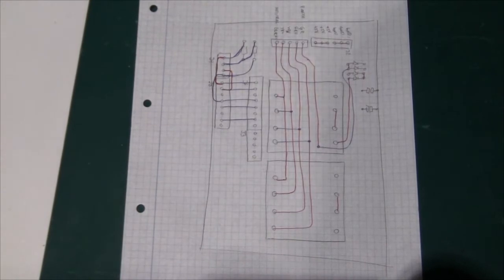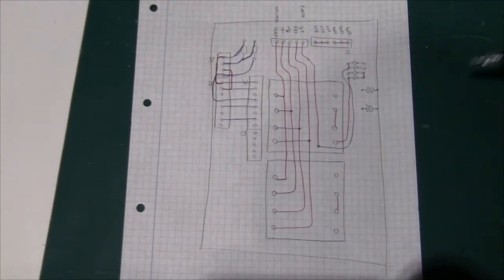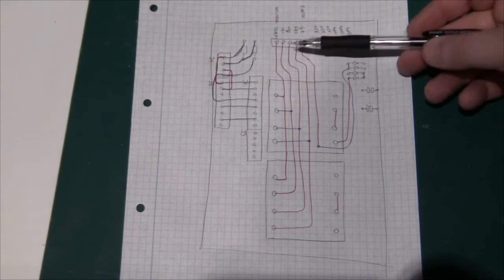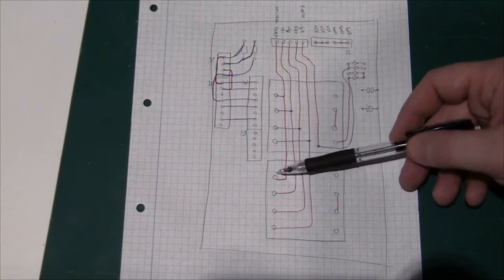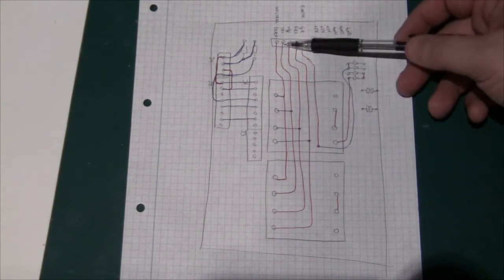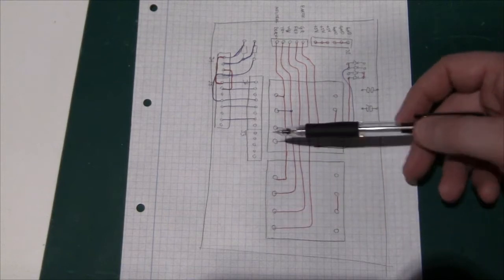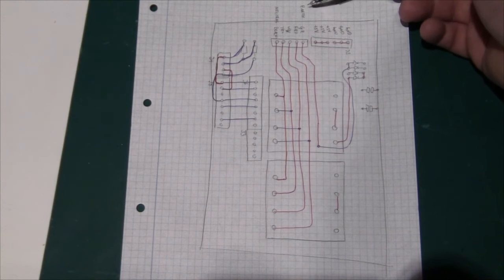So if we look at it, we have one transformer here and one transformer here. And this is the primary side and these are the secondary sides. And we can see that the power comes in through here. These are connected directly together. These two are connected directly together. These two directly together and these two directly together.